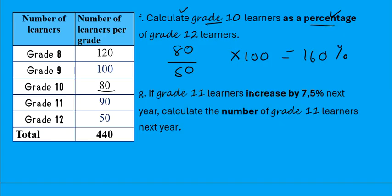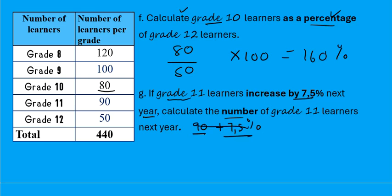If grade 11 learners increase by 7.5% next year, calculate the number of grade 11's next year. We've got 90 grade 11's and they're going to increase by 7.5%. A common mistake is to just write 90 plus 7.5% — but you cannot add a number to a percentage. This is wrong.